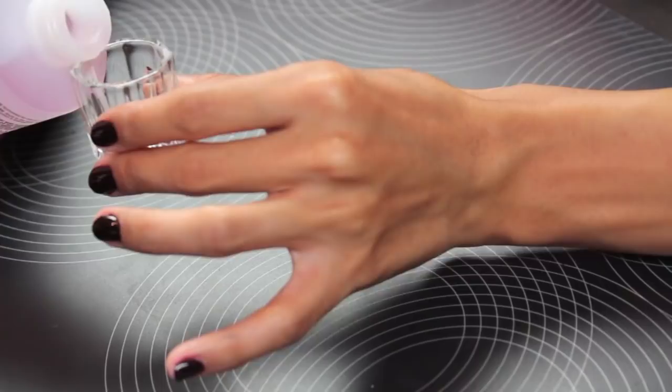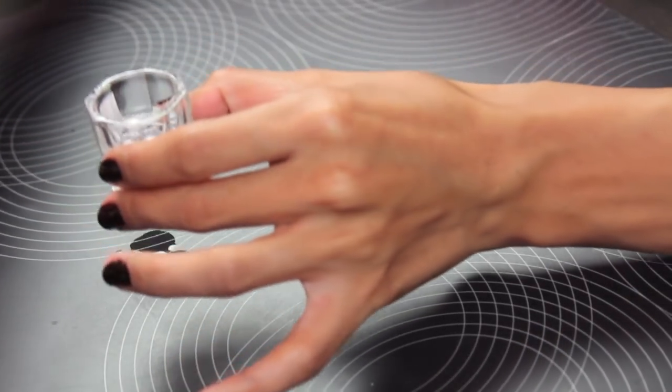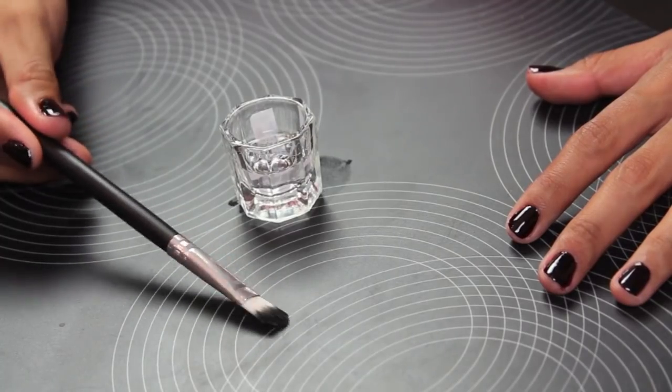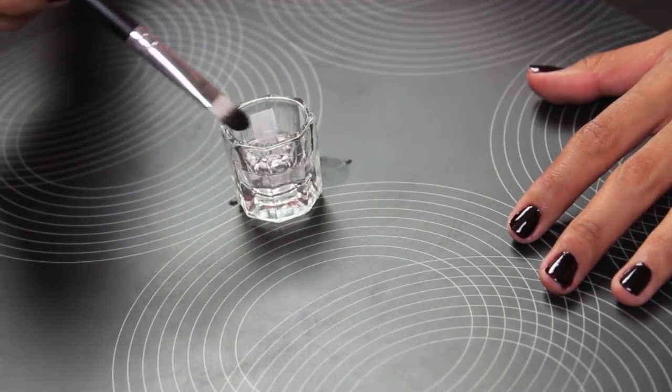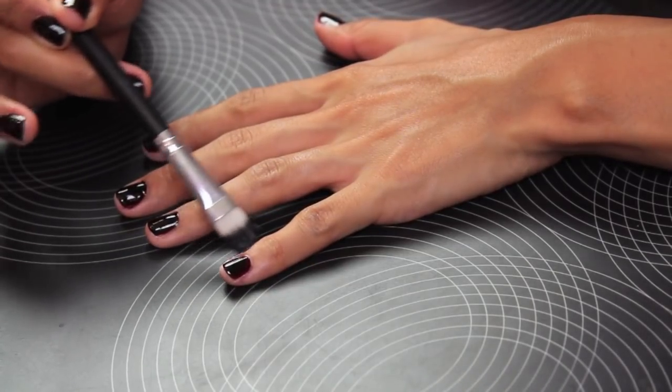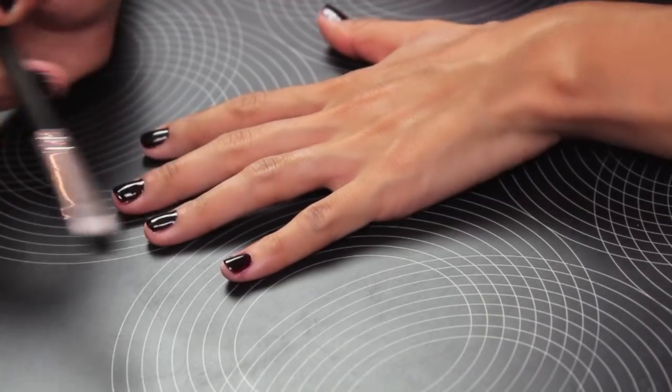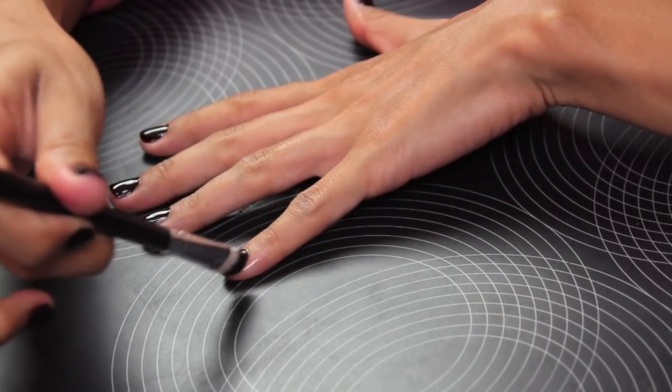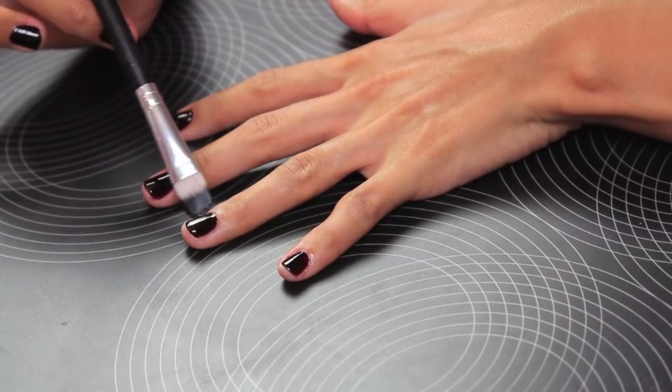Step six is cleaning up the edges. I'm just going to take some acetone into a small little cup, and I'm taking a synthetic flat shader brush—it's just an old eyeshadow brush—and I'm just going to clean up the edges. I like to start off and attempt to do a really good job the first time so I don't have a lot of nail polish to clean.